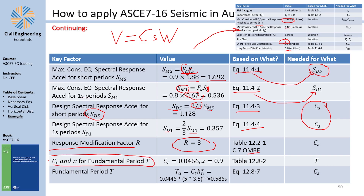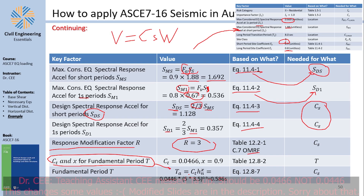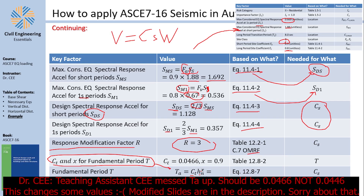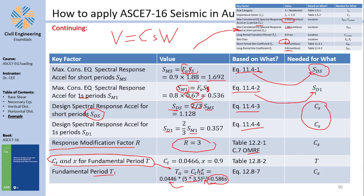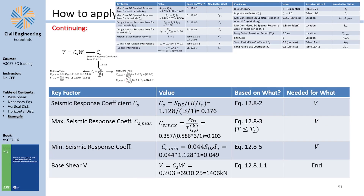Finally, I need Ct and x for the fundamental period. The period equation is T = Ct × h^x. From Table 12.8-2, Ct = 0.0466 and x = 0.9. The building height is 5 stories × 3.5 m = 17.5 m, so Ta = 0.0466 × 17.5^0.9 = 0.586 seconds. We can use Ta directly as T, so everything is fine.